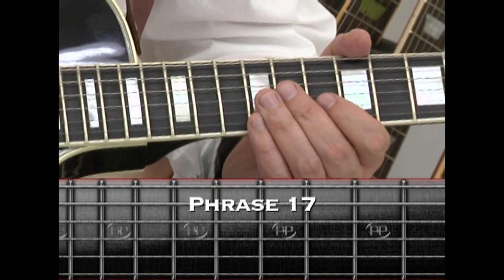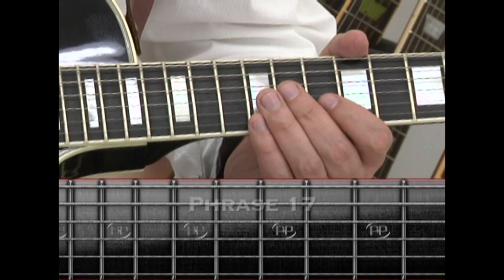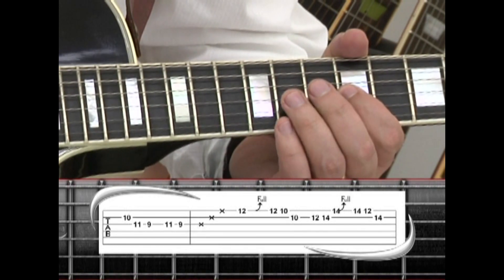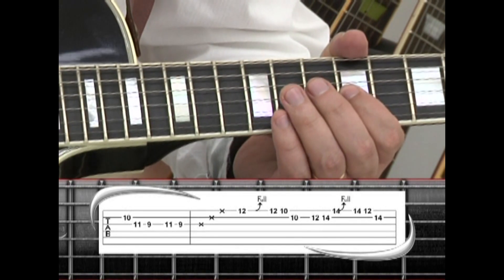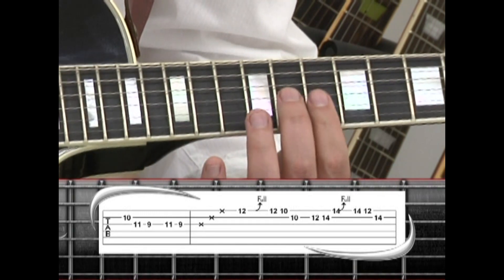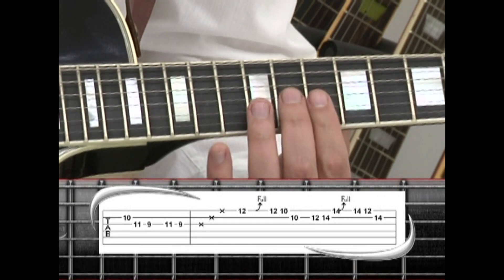Phrase 17 begins on the 2nd string 10, to 3rd string 11, 9, 11, 10. Then instead of fretting the 10th fret D chord, just lightly touch the strings to produce a string rake on strings 3, 2, and 1.